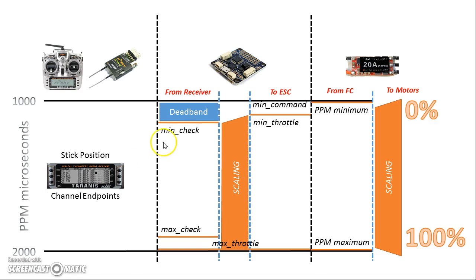Let's talk about stick commands, which brings us to min check and max check. How does the flight controller know when you're entering a stick command? You push the stick down and to the right to arm the copter, or down and to the left to disarm — how does the flight controller know you're not just doing a crazy aerobatic move? The answer is min check and max check. When the stick position goes above max check or below min check, the flight controller concludes you're inputting a stick command. If your throttle doesn't go below min check, you won't be able to disarm.